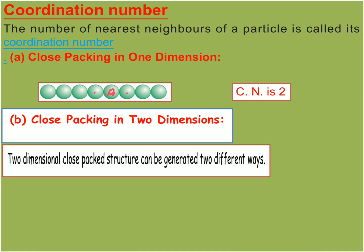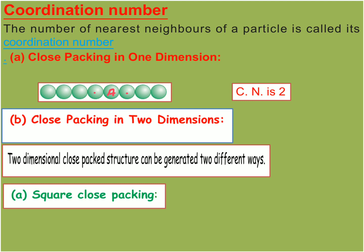Two-dimensional close packed structures can be generated in two different ways. The constituent particles — atoms, molecules, or ions — are represented as identical spheres. In two dimensions there is length and breadth. The first way is square close packing: as the name suggests, a square formation is observed.